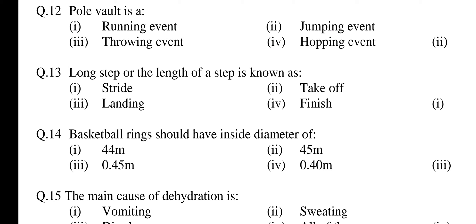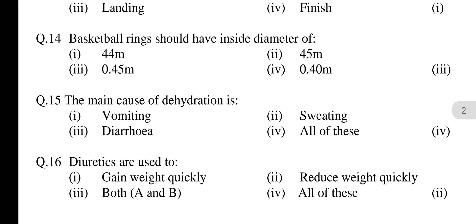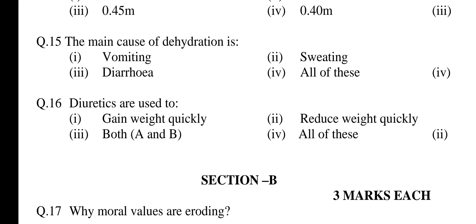Question 12: Pole vault is — option 1: Running event, 2: Jumping event, 3: Throwing event, 4: Hopping event. Answer is option 2 — jumping event. Question 13: Long step or length of step is known as — option 1: Stride, 2: Takeoff, 3: Landing, 4: Finish. Answer is option 1 — stride. Question 14: Basketball ring should have inside diameter of — option 1: 44 m, 2: 45 m, 3: 0.45 m, 4: 0.40 m. Answer is option 3 — 0.45 meter.